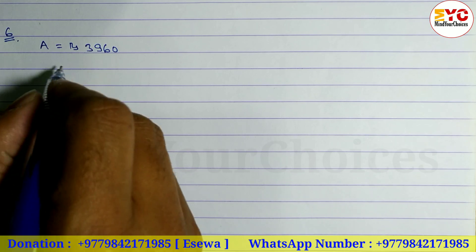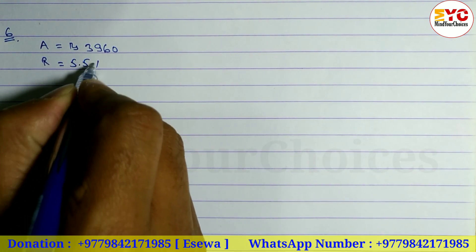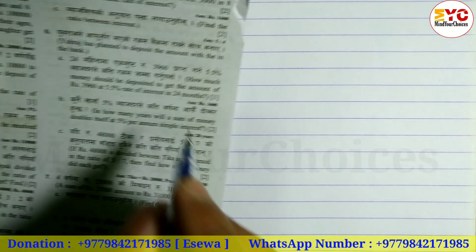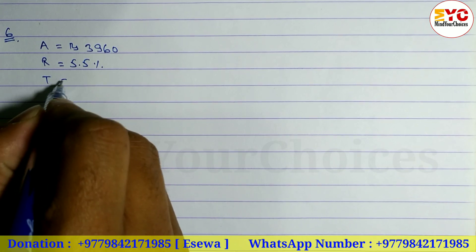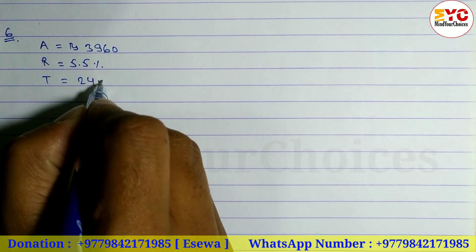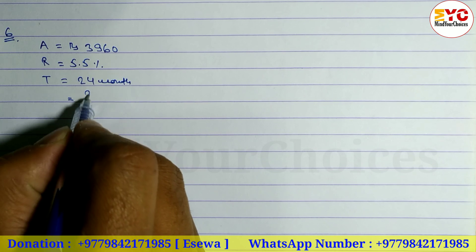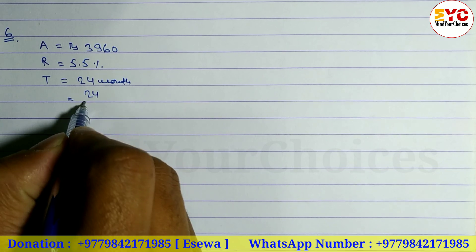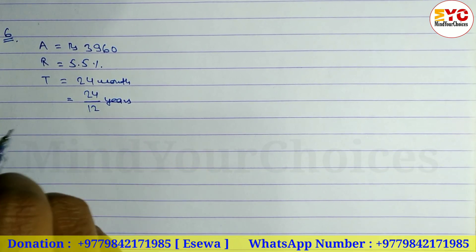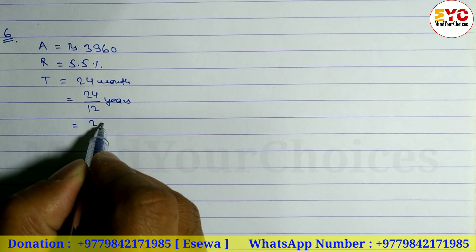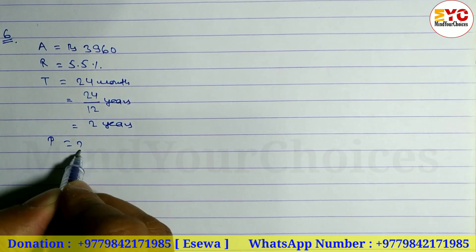Rate of interest R is equal to 5.5%. Time is equal to 24 months. Ab isla haami year ma convert garne — 24 divided by 12 equals 2 years.